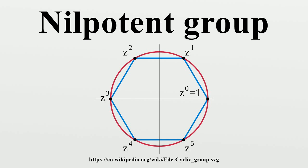For a nilpotent group, the smallest n such that G has a central series of length n is called the nilpotency class of G, and G is said to be nilpotent of class n.